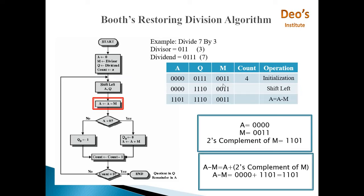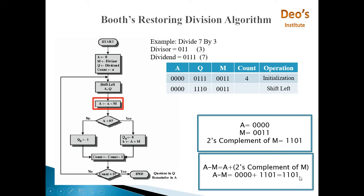Next step: A is equal to A minus M. We have to perform A minus M. Instead of minus M, we add the 2's complement of M — this is also something we have seen in Booth's multiplication algorithm. So A is 0,0,0,0. M is 0,0,1,1. The 2's complement of M is 1,1,0,1. So A minus M equals A plus 2's complement of M: 0,0,0,0 plus 1,1,0,1 equals 1,1,0,1. So A will become 1,1,0,1.